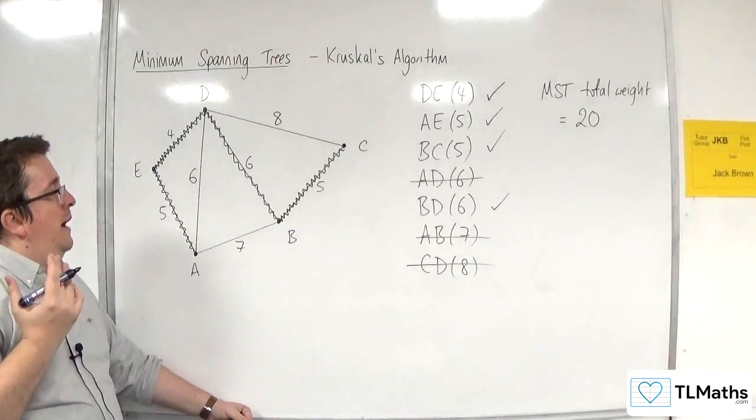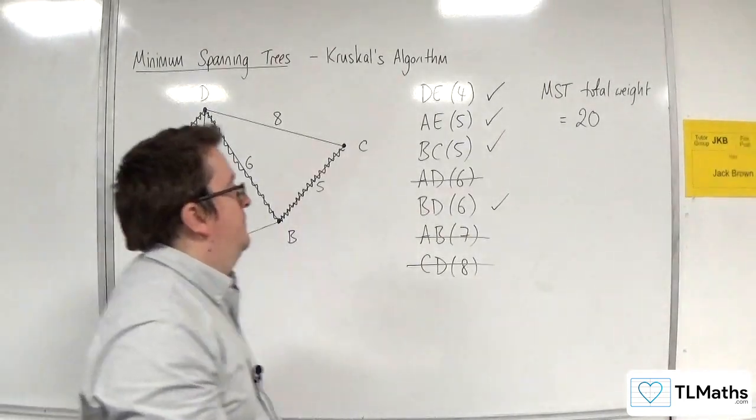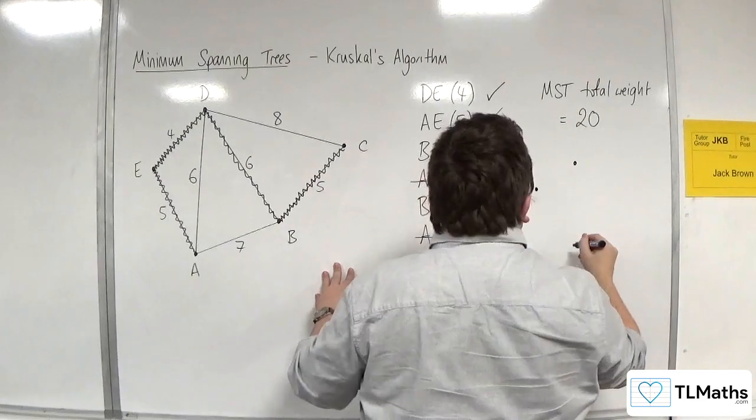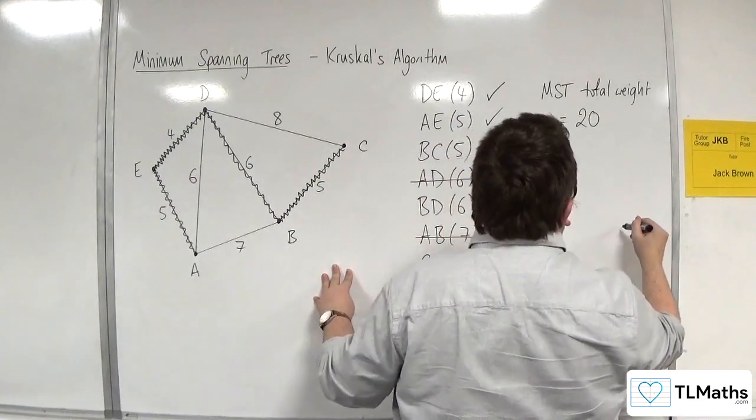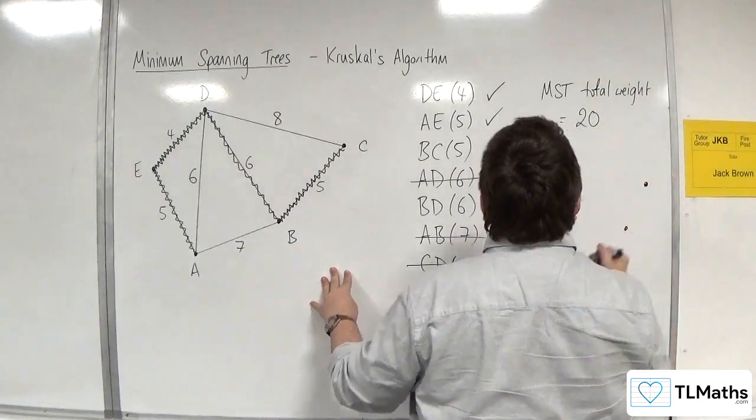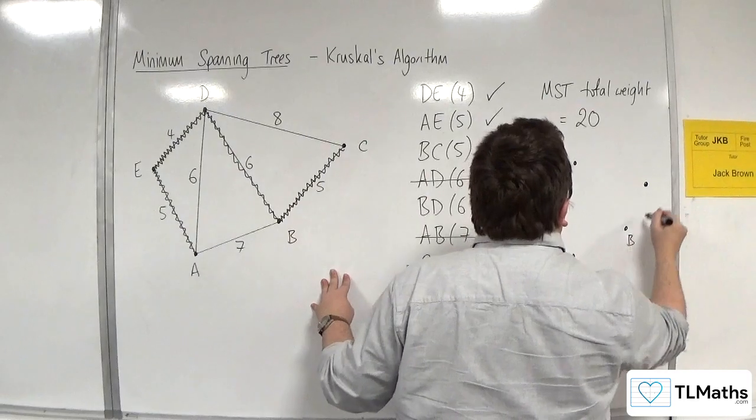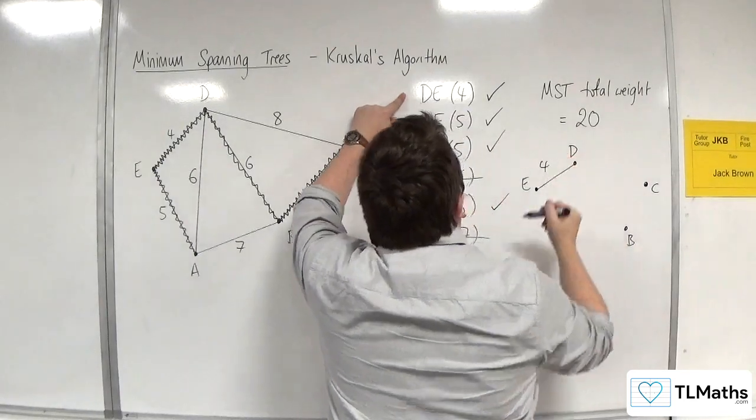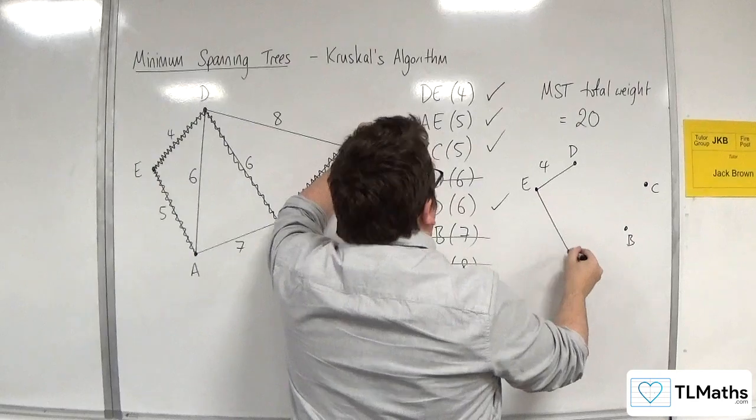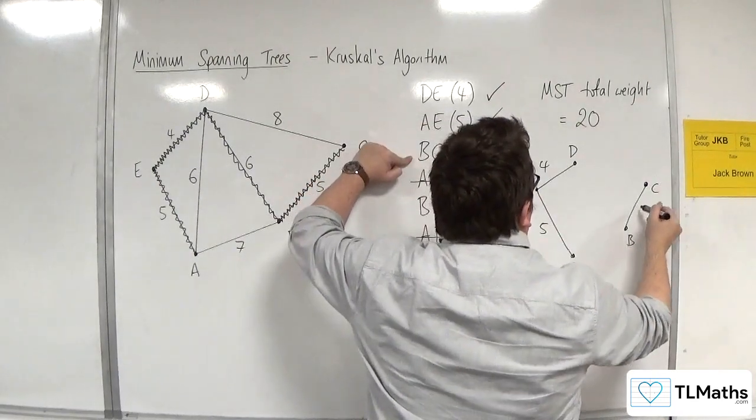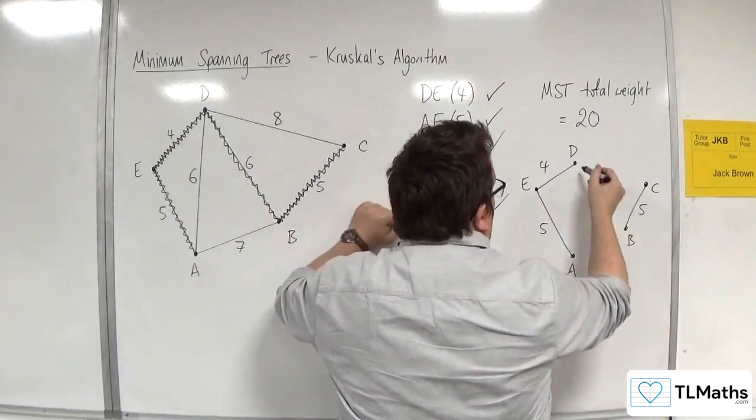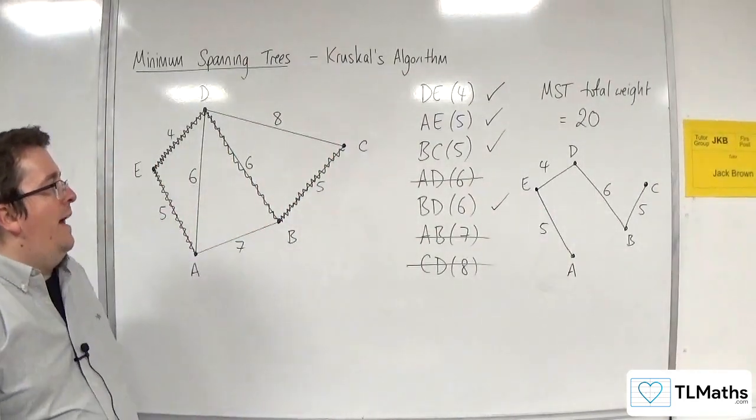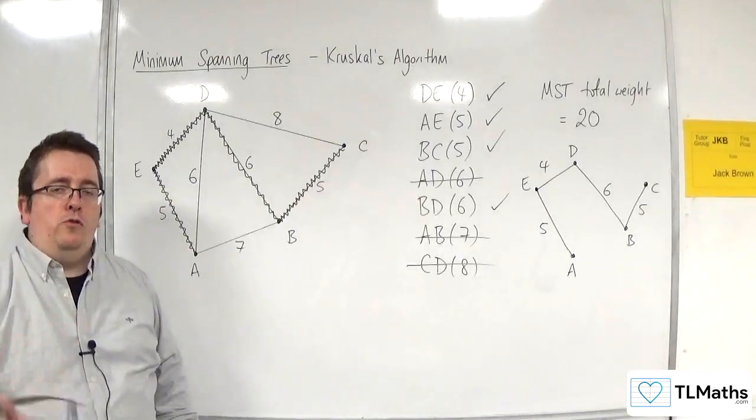Now, you might also get asked to draw your minimum spanning tree. So what you need to do is you might have to get the points. Put the points up like so, something similar to how they are. So A, B, C, D, and E. And then you've got DE, which is 4. You've got AE, which is 5. You've got BC, which is 5. And you've got BD, which is 6. So you want to make sure you draw it separately like I've done there. And that is your minimum spanning tree using Kruskal's algorithm.